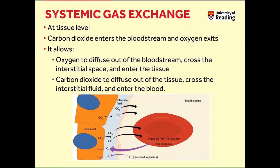The systemic gas exchange occurs at tissue level, in the working tissues, where carbon dioxide enters the blood stream and oxygen exits the blood stream. Systemic gas exchange allows oxygen to diffuse out of the blood stream, across the interstitial space shown here in light blue, and enter the tissue. On the other hand, carbon dioxide can diffuse out of the tissue, across the interstitial fluid, and enter the blood stream.